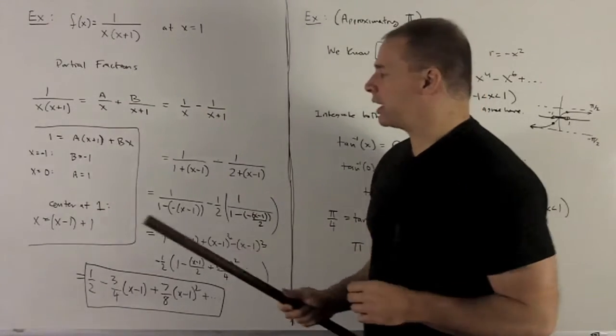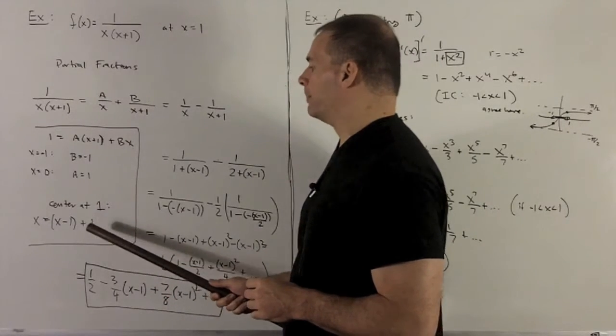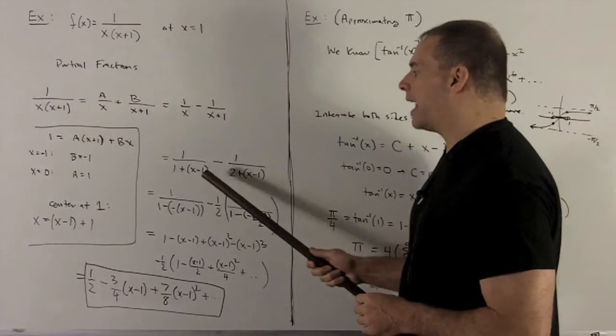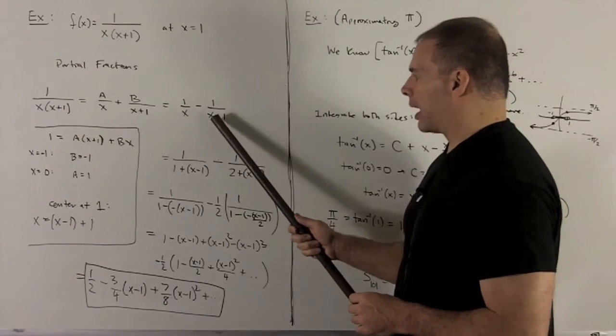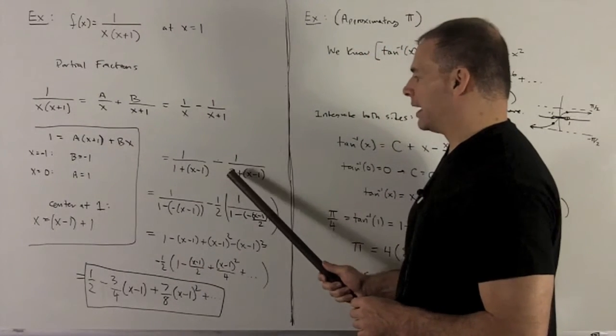So remember our trick: if I want to put the center at 1, wherever I see an x, I'm going to replace it with x minus 1 plus 1. So x is going to turn into that. 1 over x plus 1, well, I put in our x minus 1 plus 1, so the other 1 is going to combine to give me a 2.